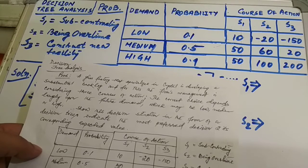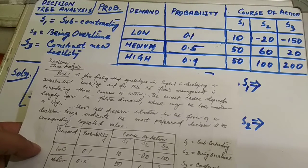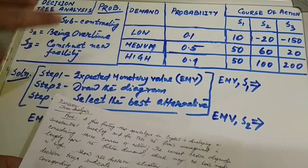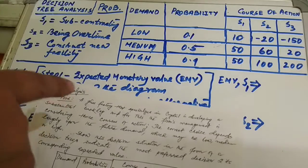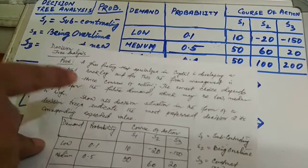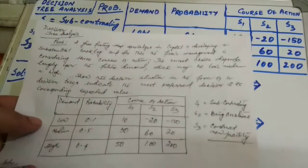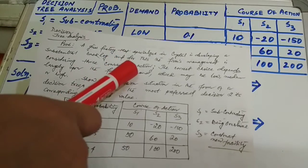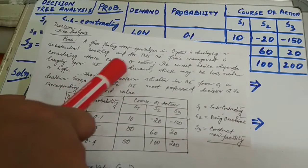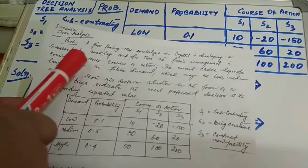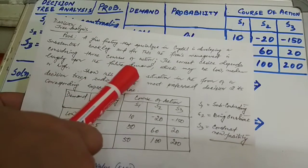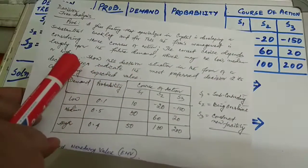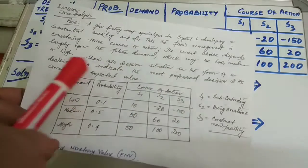I have taken a problem for solving the decision tree analysis. I have written the decision matrix on the whiteboard. The problem says a glass factory that specializes in crystal is developing a substantial backlog, and the firm's management is considering three courses of action. The correct choice depends largely on the future demand, which may be low, medium, or high. This decision situation in the form of a decision tree indicates the most preferred decision and its corresponding expected value.